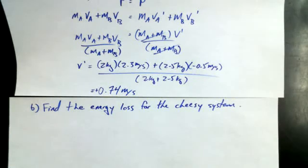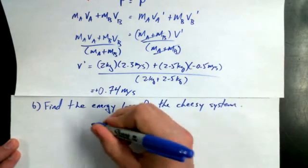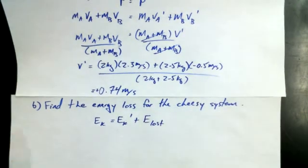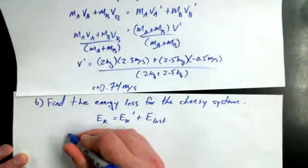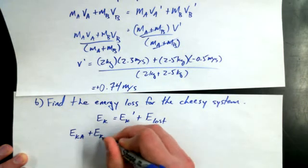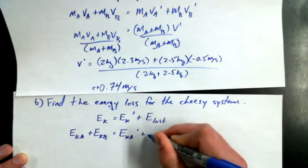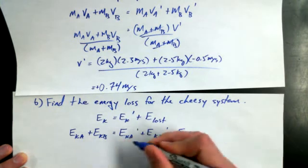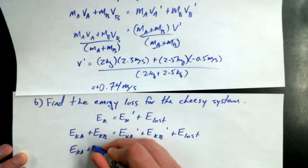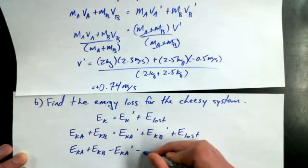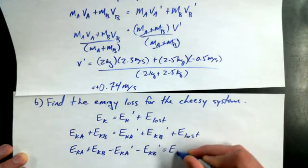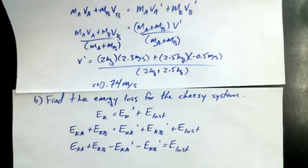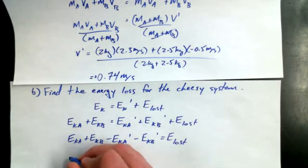Alright, find the energy loss for the cheese system. And I'm going to be writing out the formula, but I do need your help with the calculators, okay? Disgusting. What is with you? Alright, so if I take EKA prime and EKB primed over to the left-hand side of the equal sign, I'm left with E lost on the right and negatives for the EKA and EKB primed. So we can start plugging in our values here.